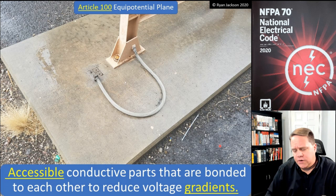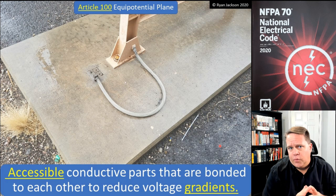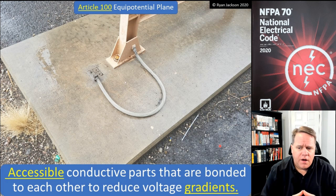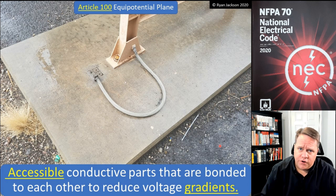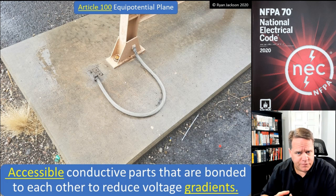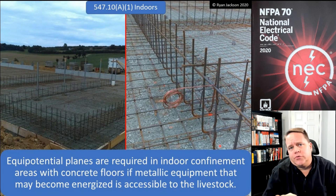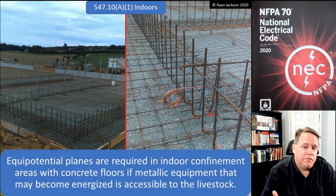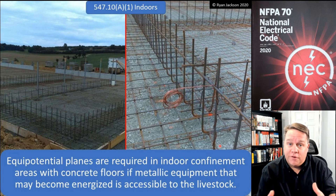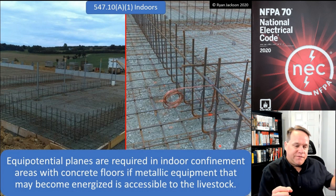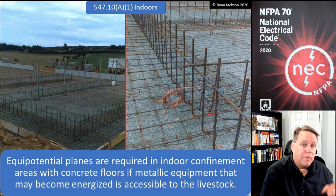Where would you find an equipotential plane in the NEC? It appears in two articles. Article 682 covers artificial and natural bodies of water — areas that don't fall under Article 555 for marinas, boatyards, and docks, and don't quite meet the criteria of a swimming pool. It also appears in Article 547 for agricultural buildings. In the dairy industry especially, this is a really important concept. For a human, two or three volts difference between your feet and hands is maybe perceptible — probably not even perceptible.